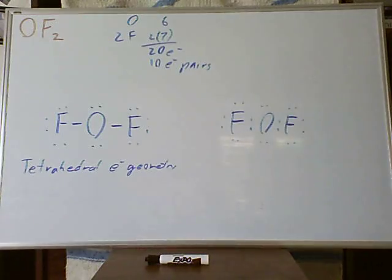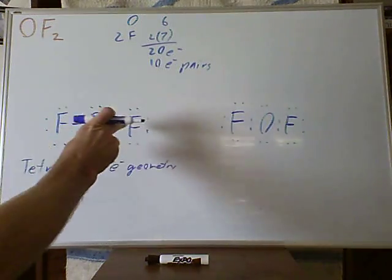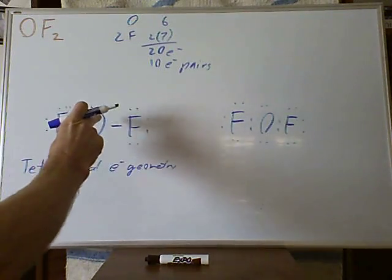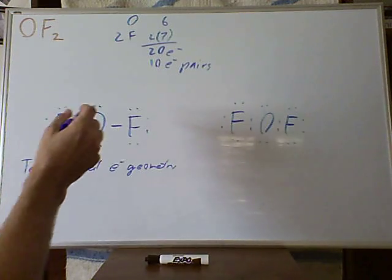But the lone pairs don't stick out of the oxygen at all, only the fluorines, the attached fluorines stick out. So the geometry of the molecule is based on the atoms, so we have 3 atoms.